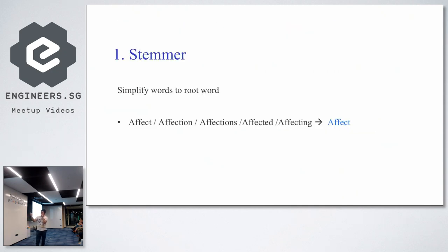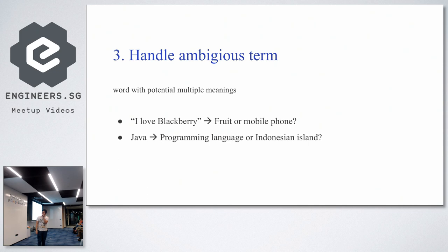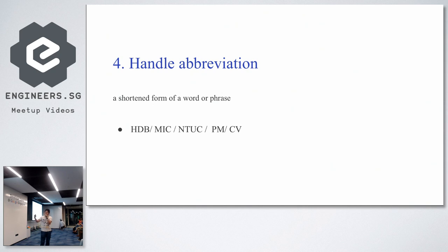Stemming simplifies words to their root form — for example, 'affections' becomes 'affect.' This is important because ML and NLP systems recognize words as binary vectors, so 'affect' and 'affections' without stemming are treated as completely different words. Stop word removal eliminates words with little meaning. Ambiguous terms are also a challenge — 'I love Blackberry': is it the fruit or the phone? 'Java': programming language or the Indonesian island? Abbreviations like HDB, MRT, PMS, and TUC also need to be mapped — if you don't tell the machine via a lookup table, it won't understand.